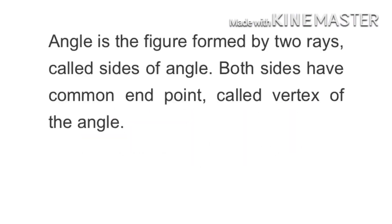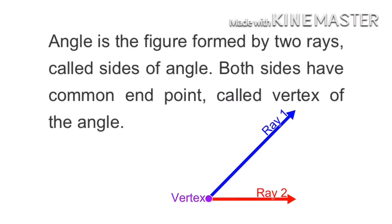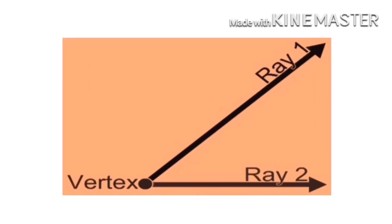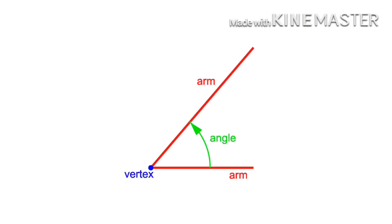What is an angle? An angle is a figure formed by two rays called the sides of the angle. Both sides have a common end point, which is called the vertex of the angle. The two rays are called the arms of the angle, and the common point is called the vertex.